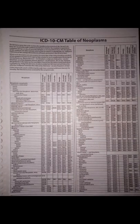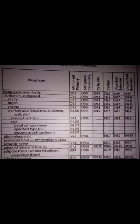This is the neoplasm table. Neoplasm codes are found using this table in the alphabetic index. The table columns are: malignant primary, malignant secondary, carcinoma in situ, benign, uncertain behavior, and unspecified.